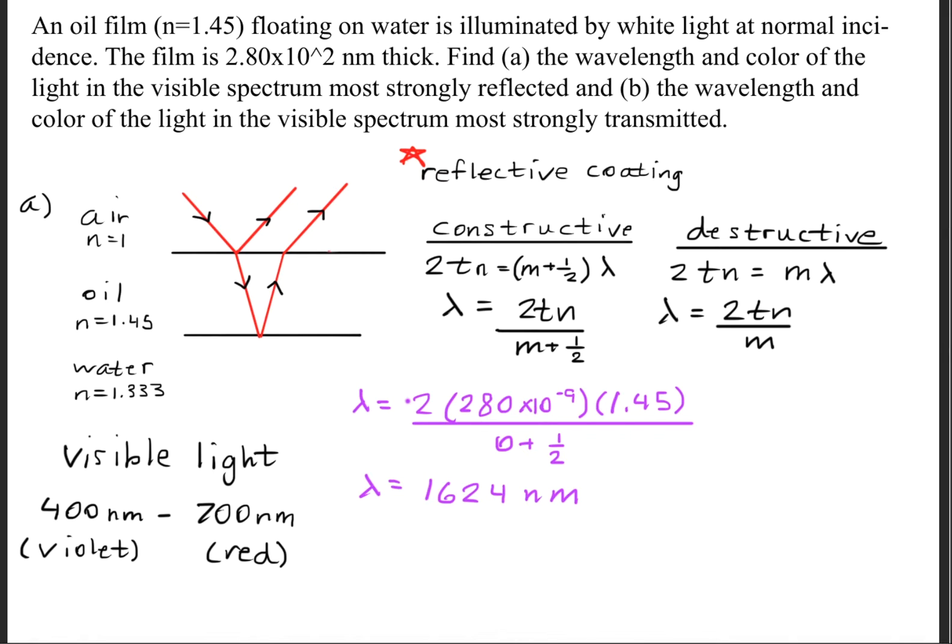Here we have two times the thickness. We were told the thickness was 280 times 10 to the minus ninth meters, and we multiply that by the index of refraction for the oil film, which is 1.45. We divide it by m equals zero plus one-half. This gives us a wavelength of 1624 nanometers, which lies beyond the visible light spectrum. This is an infrared wavelength.